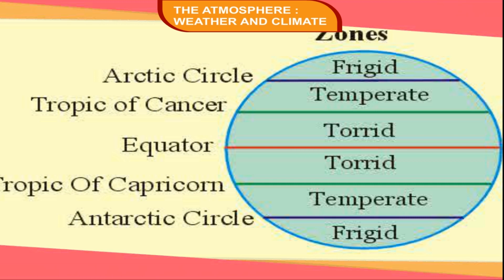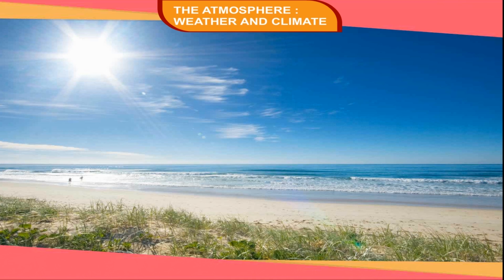The torrid zone, the temperate zone, and the frigid zone. The figure depicts three distinct temperature zones. The torrid zone lies between the Tropic of Cancer and the Tropic of Capricorn. Here, the sun's rays are almost vertical throughout the year. This zone receives the maximum heat and is the hottest zone of the earth. The temperate zone lies between the Tropic of Cancer and the Arctic Circle in the Northern Hemisphere, and between the Tropic of Capricorn and the Antarctic Circle in the Southern Hemisphere.